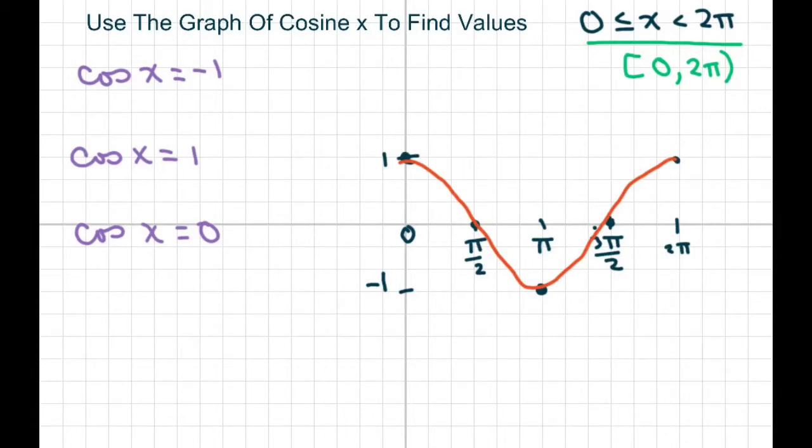The quadrantal angles are π/2, π, 3π/2, and 2π. At negative 1, we only have one value from 0 to 2π, and that would be x equals π, because at negative 1 we're at π.